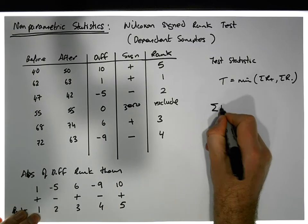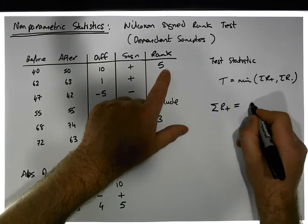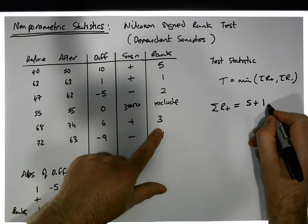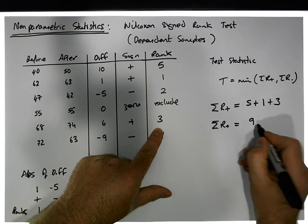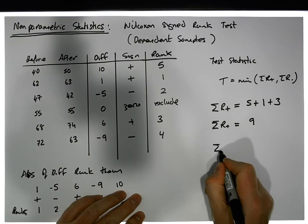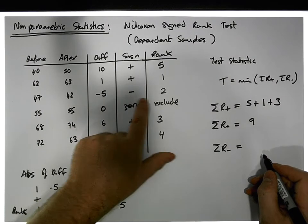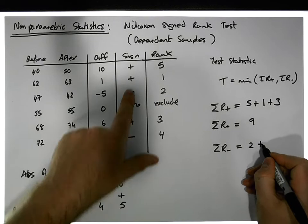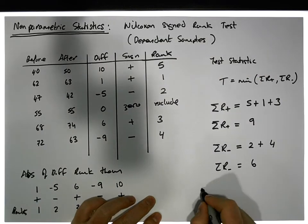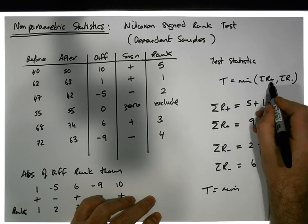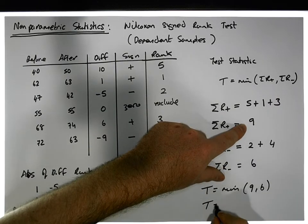Now we calculate the sum of the positive ranks: ranks 1, 3, and 5 are positive, giving us 1 + 3 + 5 = 9. The sum of the negative ranks: ranks 2 and 4 are negative, giving us 2 + 4 = 6. The test statistic T is the minimum of these two — the minimum of 9 and 6 — which gives us a test statistic equal to 6.